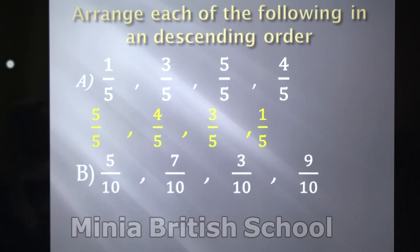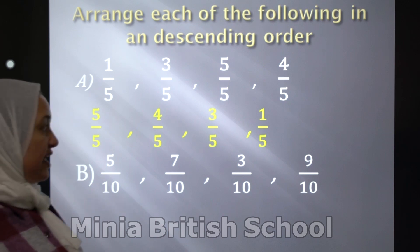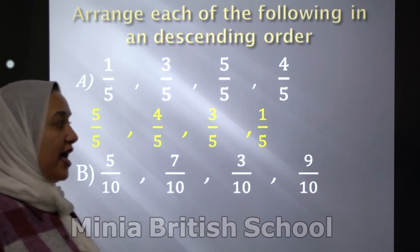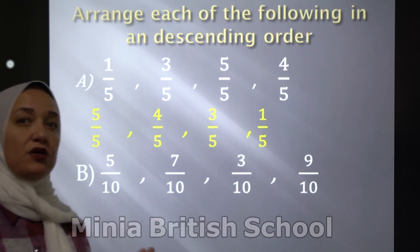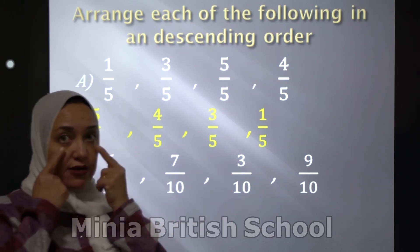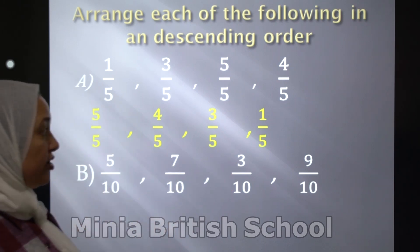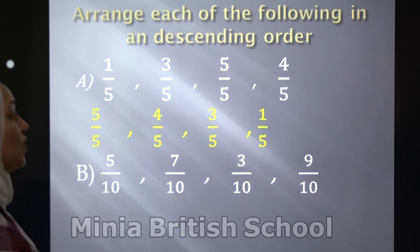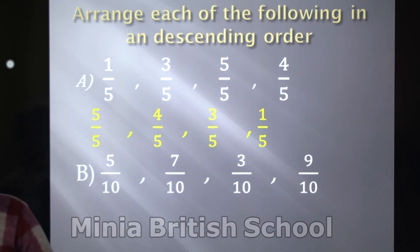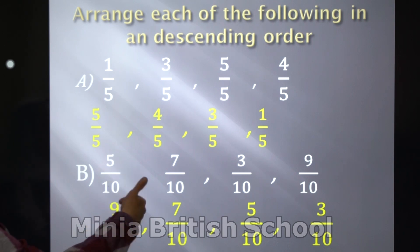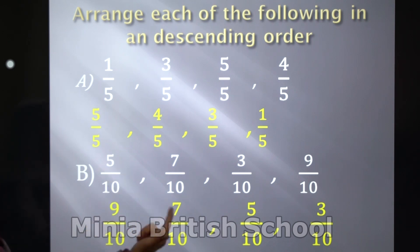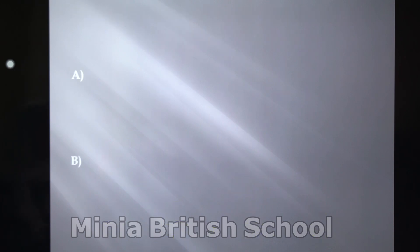Letter B: you have 5 over 10, 7 over 10, 3 over 10, and 9 over 10. All the denominators are the same, so you must look at the numerators. Which one is the greatest? Yes, it's 9 over 10; after that, 7 over 10; after that, 5 over 10; and the lowest one is 3 over 10.